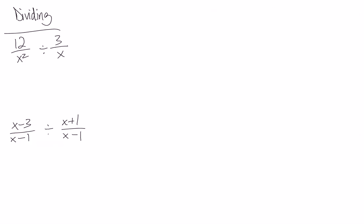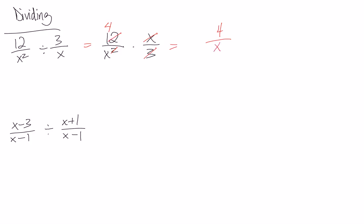Let's look at dividing now. Remember with dividing fractions, you have to change it to multiply. So this first one, let's rewrite it as 12 over X squared times X over 3 — so we've flipped it and we're ready to factor. In this case there's nothing that needs to get factored. We're ready to cancel: we can cancel one of the X's on the bottom with one of the X's on the top, and cancel the 3 with the 12, leaving a 4. So our final answer is 4 on the top and an X on the bottom.